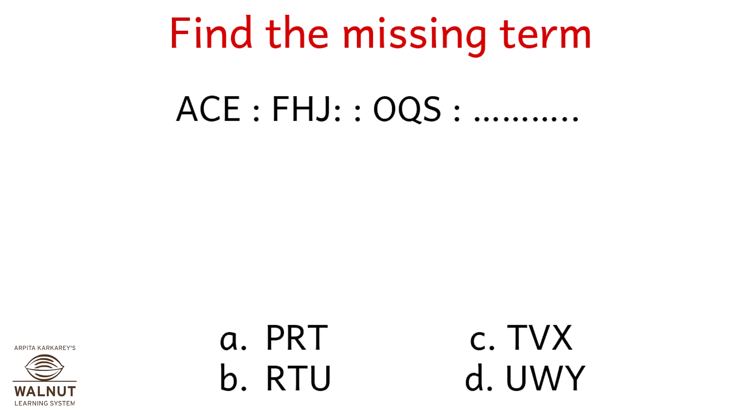Find the missing term. ACE is to FHJ as OQS is to what?